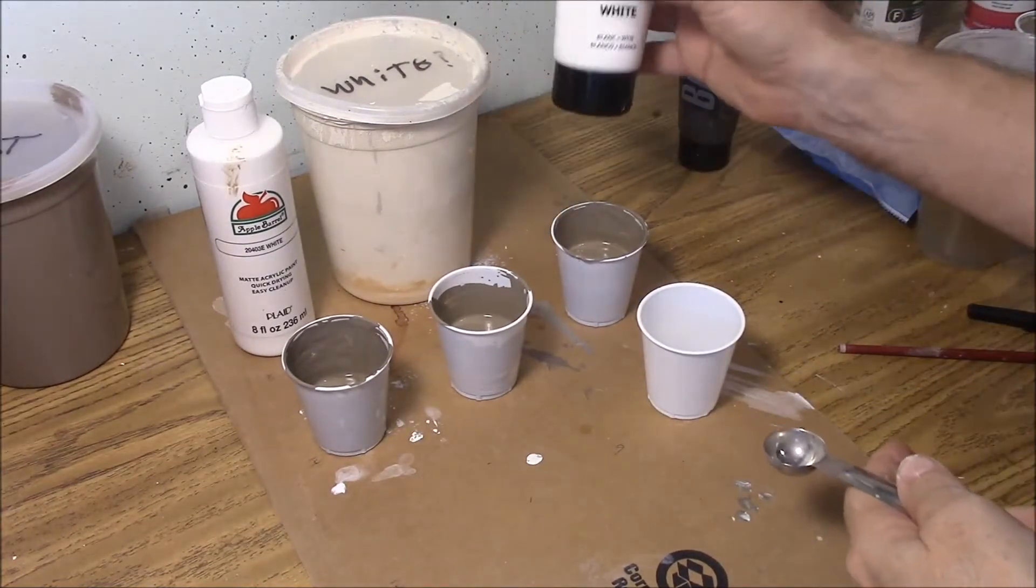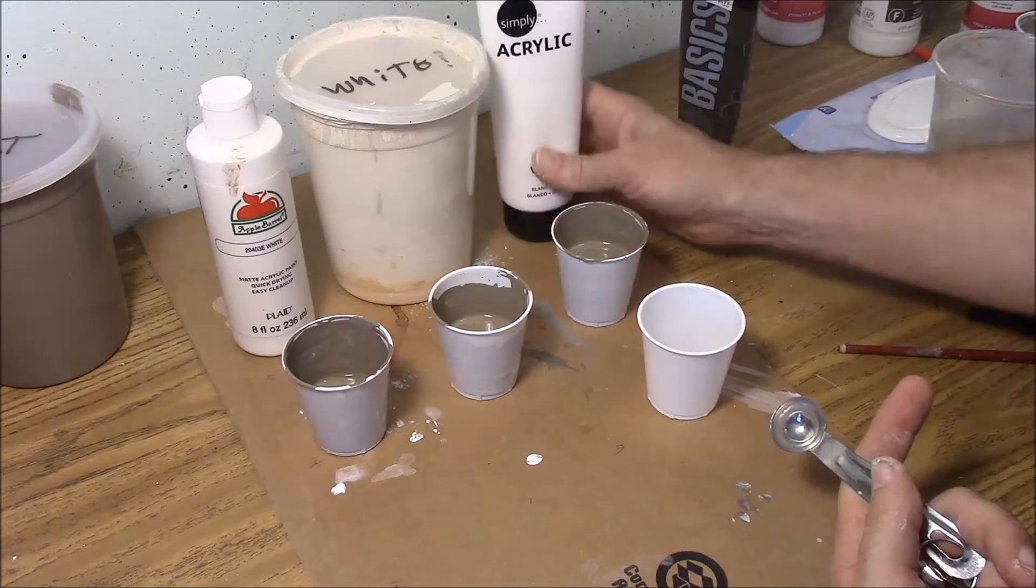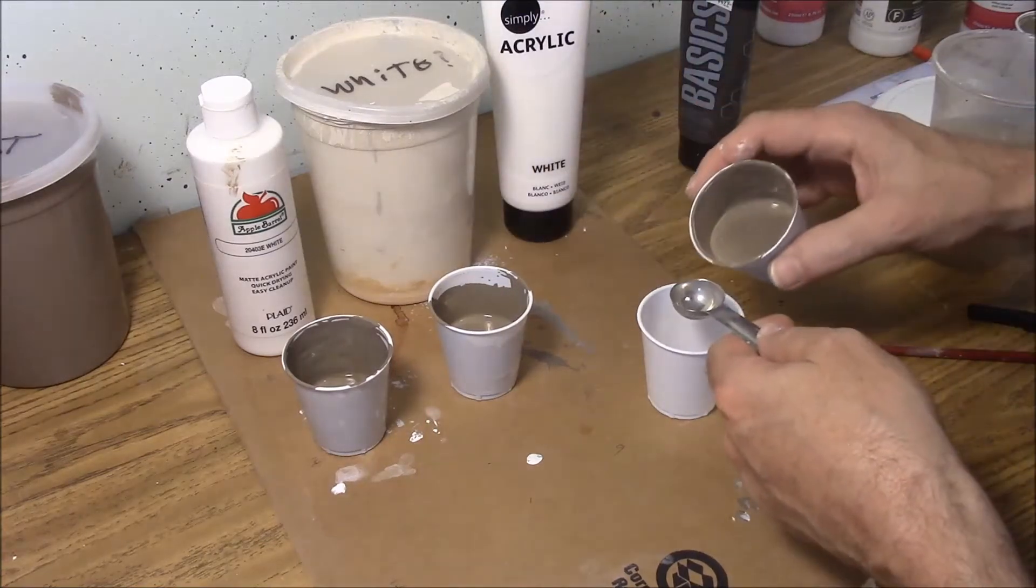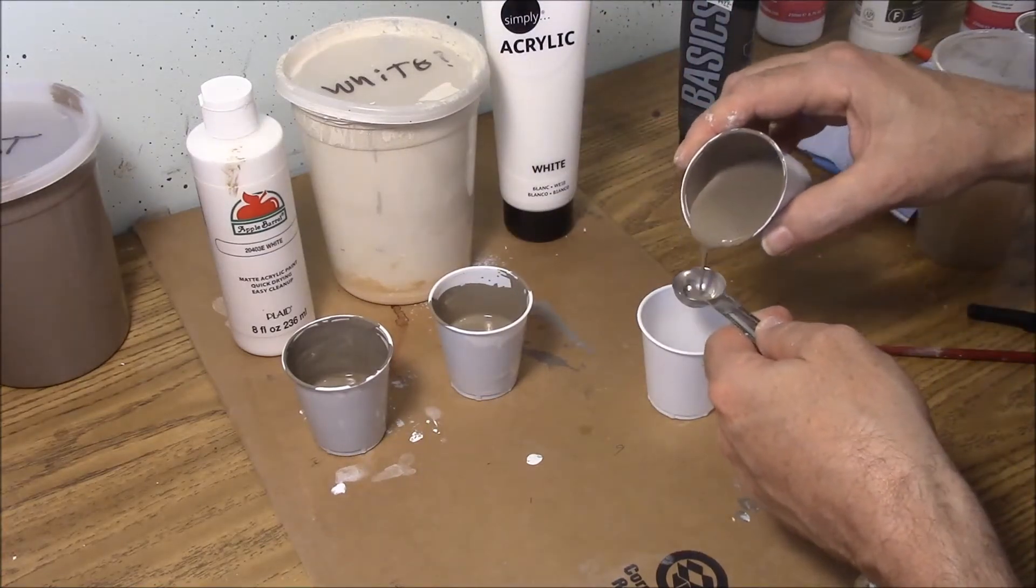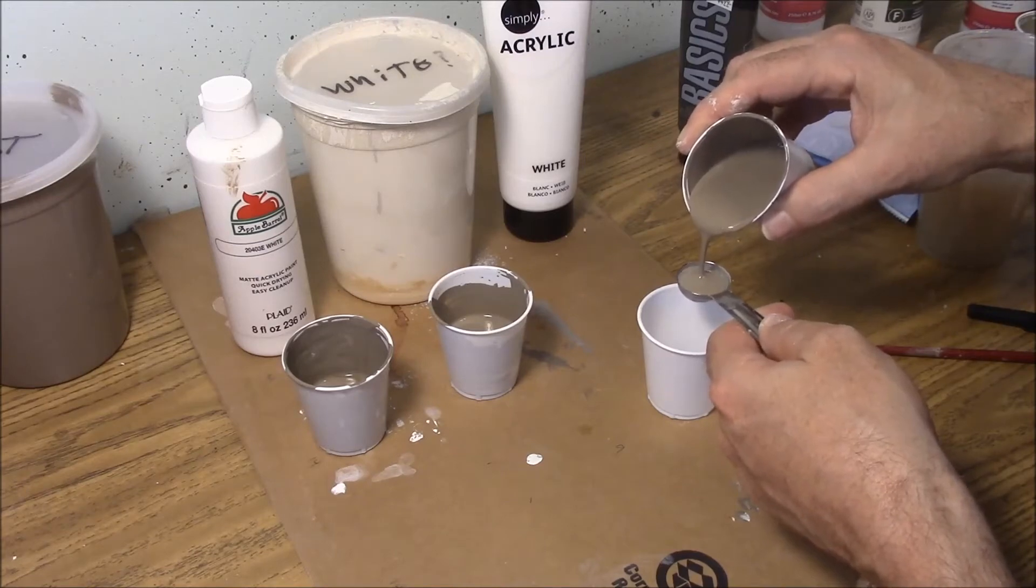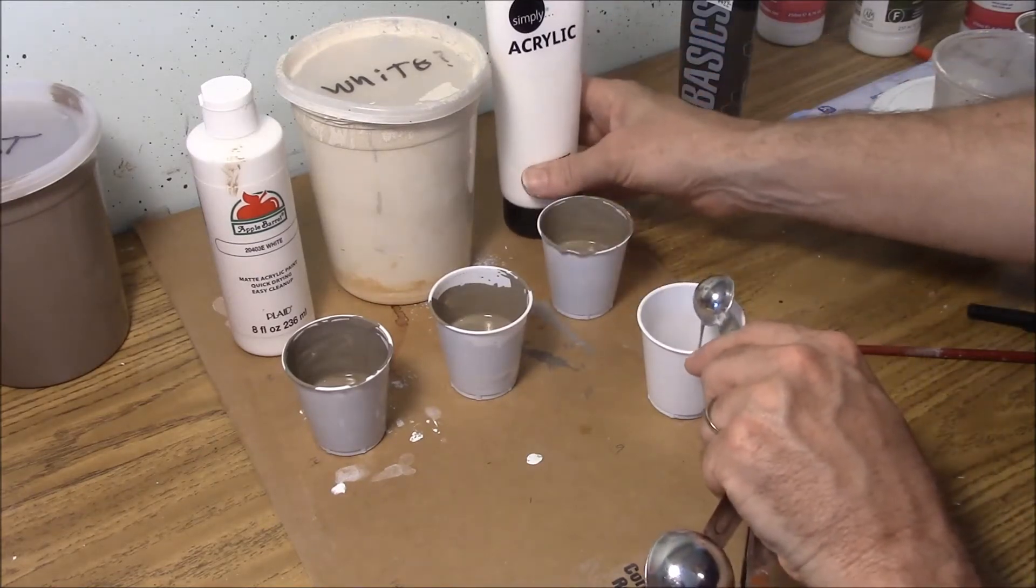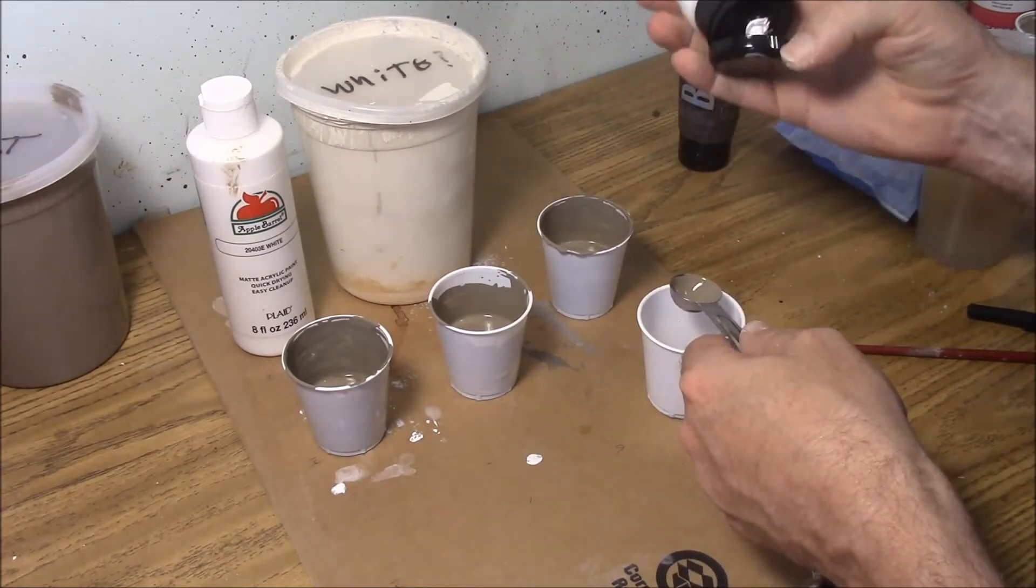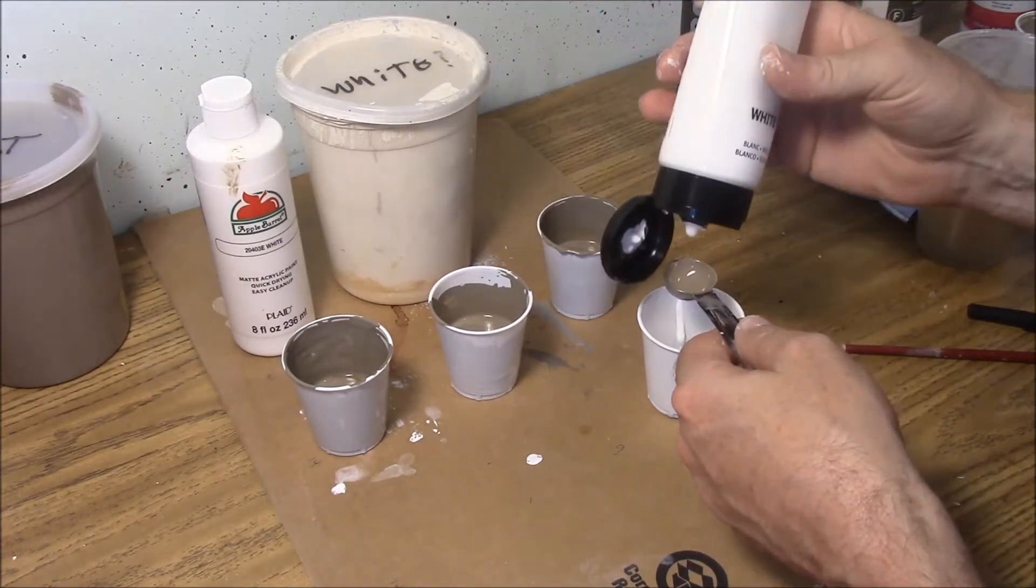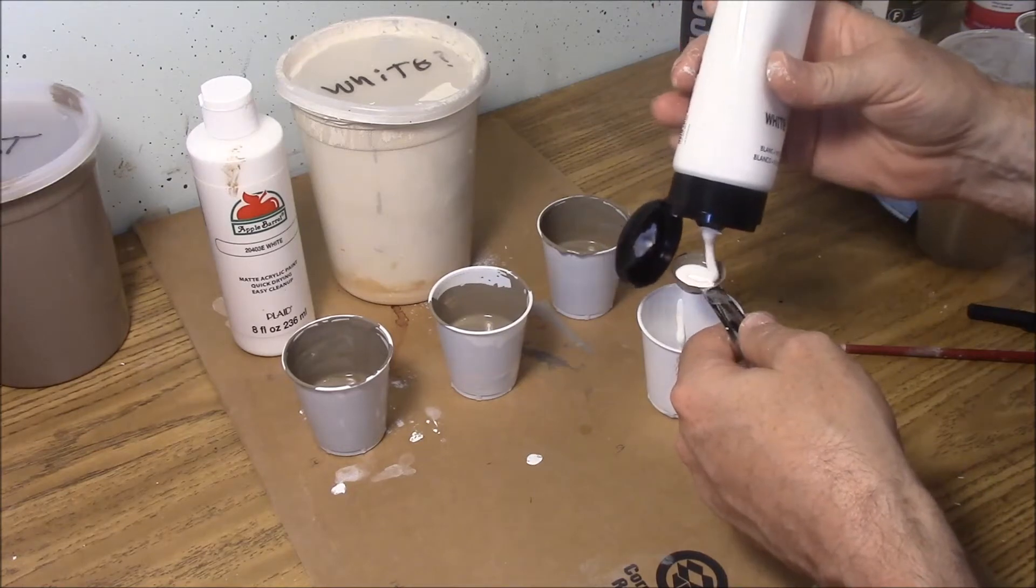So in this case, let's say I use this - this is two parts of white to the dirt color. Simply take the dirt color that you've mixed up. Notice I'm only doing a teaspoon of this and a teaspoon of the other. For dry brushing, you really don't need much paint at all. I would suggest only mixing up a teaspoon worth of it.